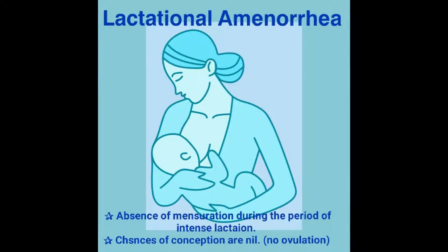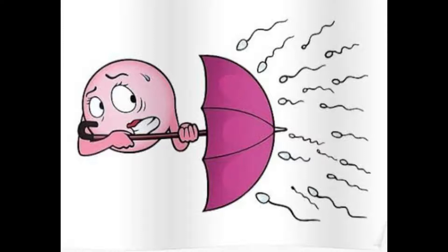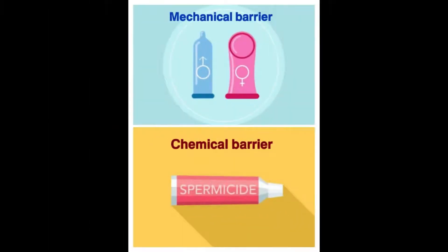Moving on to the next method: barrier method. In this also, we prevent sperm and ovum from meeting, but with the help of barriers. Barrier method includes mechanical and chemical barriers. In mechanical barriers, use of male and female condoms prevents meeting of sperm and ova and also provides protection from STDs. Use of spermicidal creams, jellies, or foams along with mechanical barriers are known as chemical barriers.